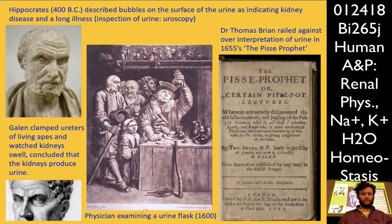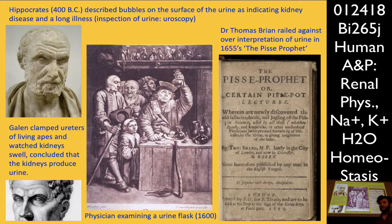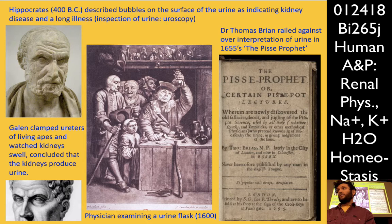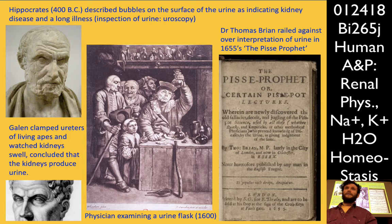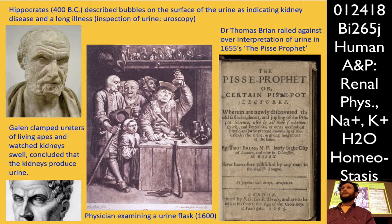Galen was the first person to identify the kidneys as being the source of the urine. The Romans had a proscription against human dissection, but there was no such problem with doing this to animals. Galen would open up the posterior compartment of apes, clamped their ureters, watched the kidneys swell from the buildup of urine, and then surmised that it was actually the kidneys producing the urine.